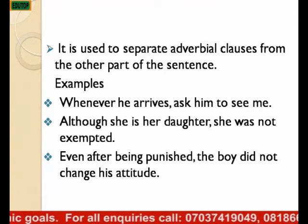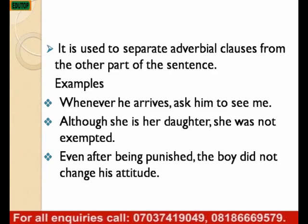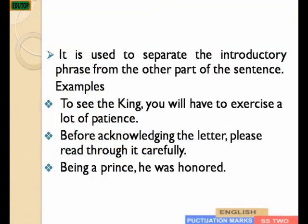Comma is used to separate the introductory phrase from the other part of the sentence. Examples: To see the king, you will have to exercise a lot of patience. Before acknowledging the letter, he read through it carefully. Being a prince, he was honored. So we have introductory phrases like 'to see the king,' 'before acknowledging the letter,' and 'being a prince' — these introductory phrases attract a comma before moving to the other part of the sentence.